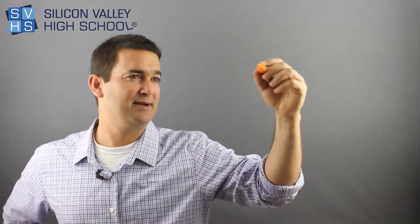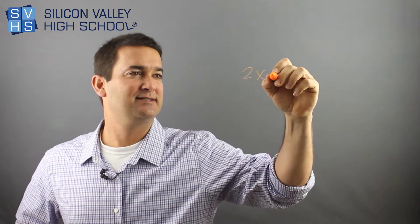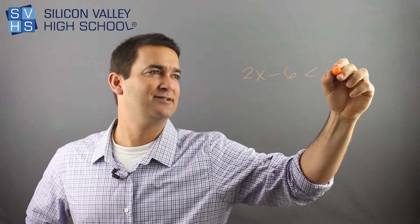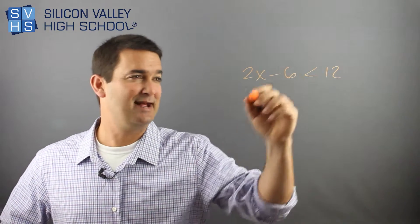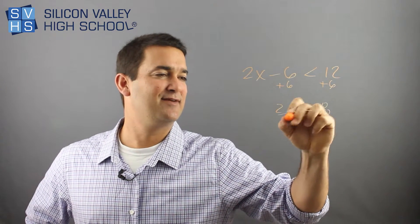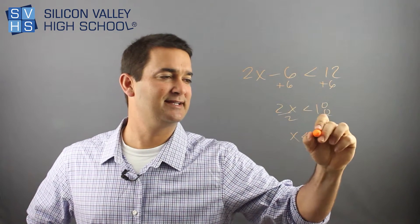So I'll give one more example. So let's say you had like, 2x minus 6 is less than 12, right? Same thing, plus 6, plus 6, you have 2x less than 18, divided by 2, divided by 2, x is less than 9.